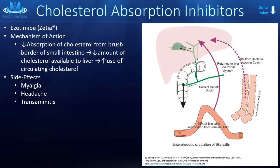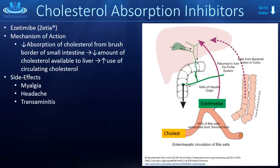Now for the cholesterol absorption inhibitors. Really there's only one commonly used — ezetimibe, also known as Zetia. The mechanism is related to, but not the same as, the bile acid sequestrants. Bile acid sequestrants block resorption of bile, forcing the liver to create new bile from circulating cholesterol, fatty acids, and triglycerides. Similarly, ezetimibe blocks absorption of cholesterol from the brush border in the small intestine, decreasing the amount of cholesterol available to the liver, so the liver must pull it from circulation. Side effects include myalgias, headache, and transaminitis — an elevation in liver enzymes indicating liver irritation.